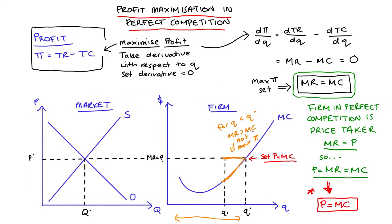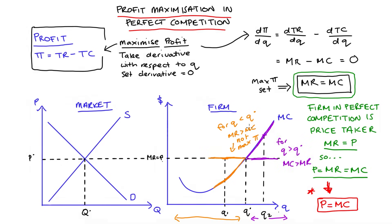We can make a similar argument for any quantity above Q star. Extending out the price line to Q2, you can see that the marginal cost of production — how much it costs to make that unit — is greater than the marginal revenue the firm would get from selling it. So marginal cost is higher than the price, and it's a bad idea to produce that unit. Q2 definitely does not maximize profit. This argument holds for any quantity above Q star: marginal cost exceeds marginal revenue, so we shouldn't produce those units. Therefore, the optimal choice must be exactly Q star.